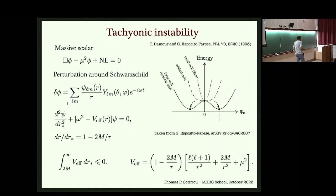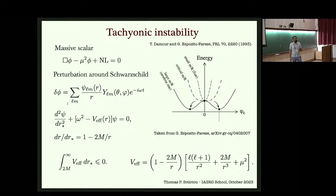This instability is quenched by nonlinearities, and then a scalarized — or non-trivial — configuration for the scalar field emerges inside and outside the star. Hence that spacetime is no longer the spacetime of GR. This happens sharply at a given compactness or central density, and hence it looks like a phase transition. The problem is that this is heavily constrained by binary pulsars.